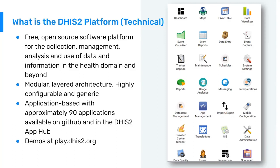DHIS2 is a modular and layered architecture. Essentially, what that means is that there is a generic core. This generic core represents a suite of about 30 applications that the University of Oslo develops. It's probably best to think about DHIS2 maybe as a smartphone. On your cell phone, when you first buy it, you see that you have several applications that come with the cell phone itself.